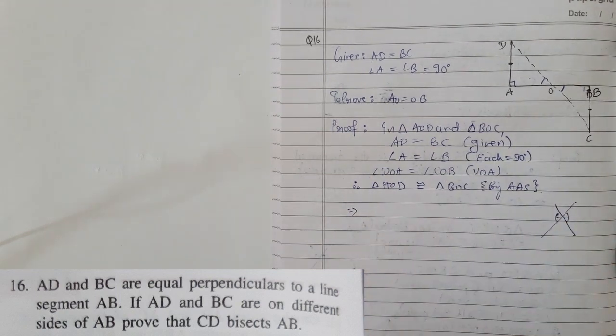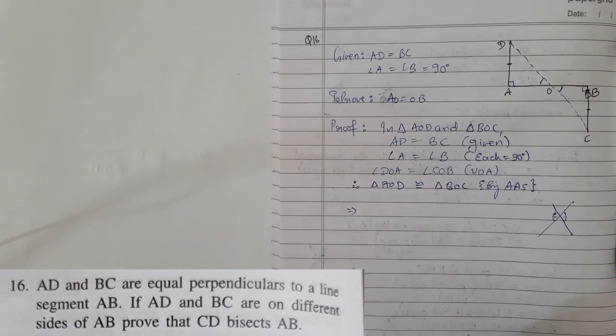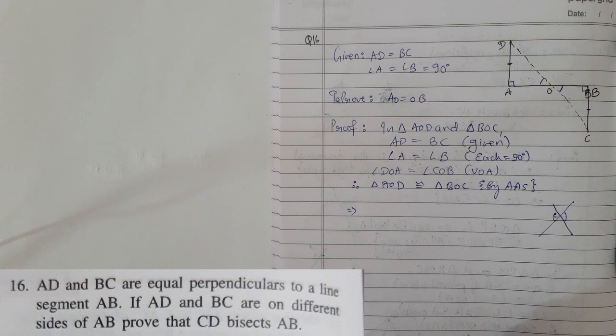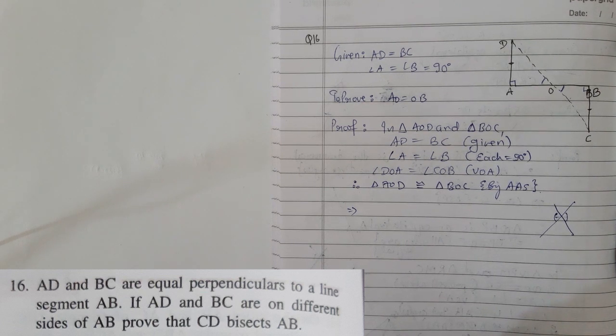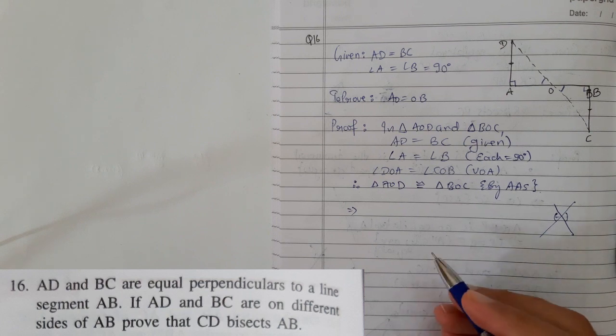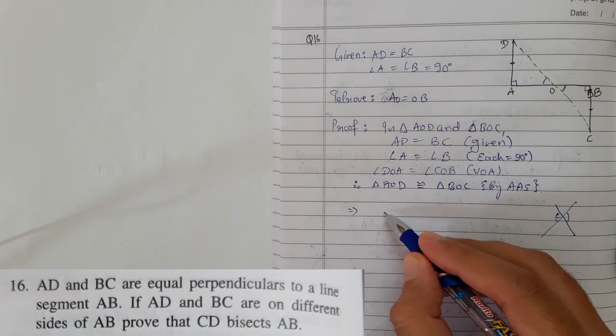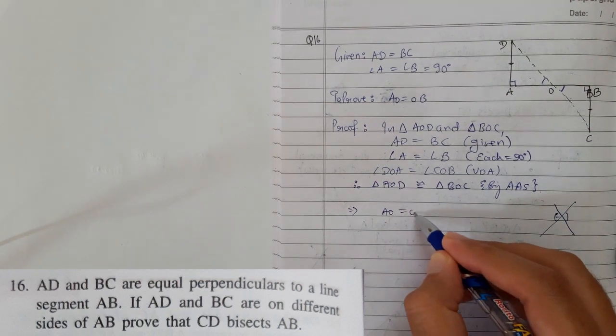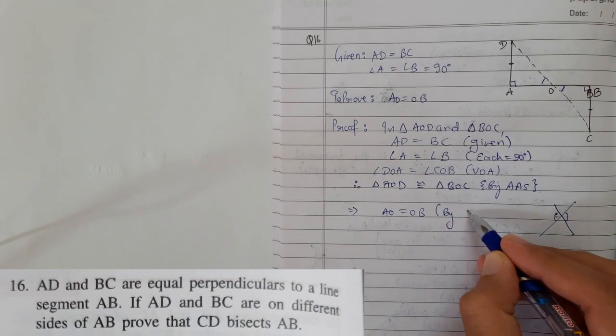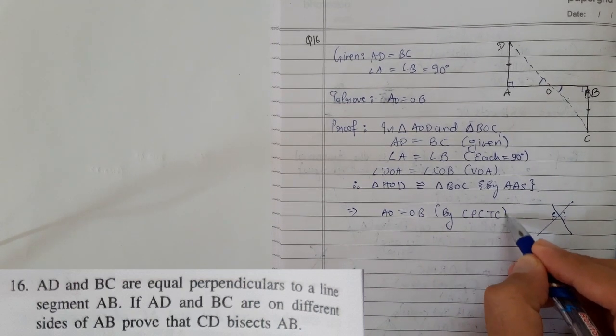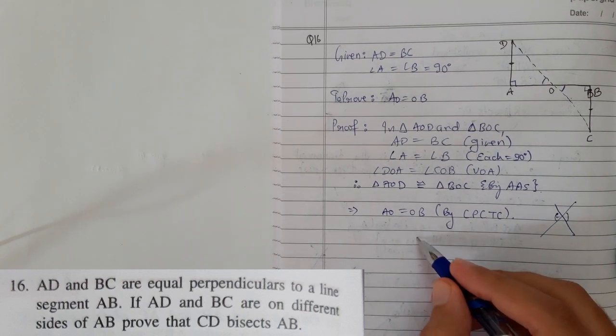Therefore, if the two triangles are congruent, the remaining three elements are also congruent with the help of CPCTC, congruent part of congruent triangles. So we can write AO equals to OB by CPCTC. So hence proved.